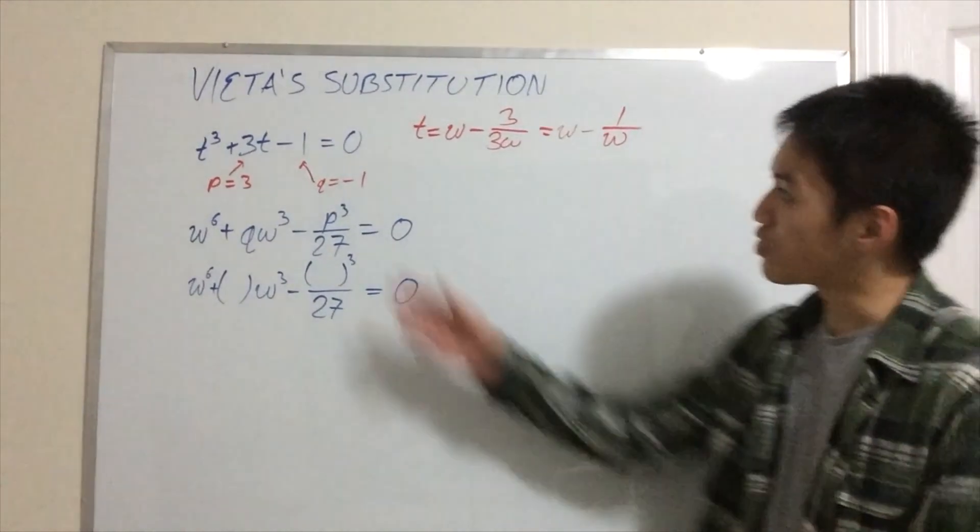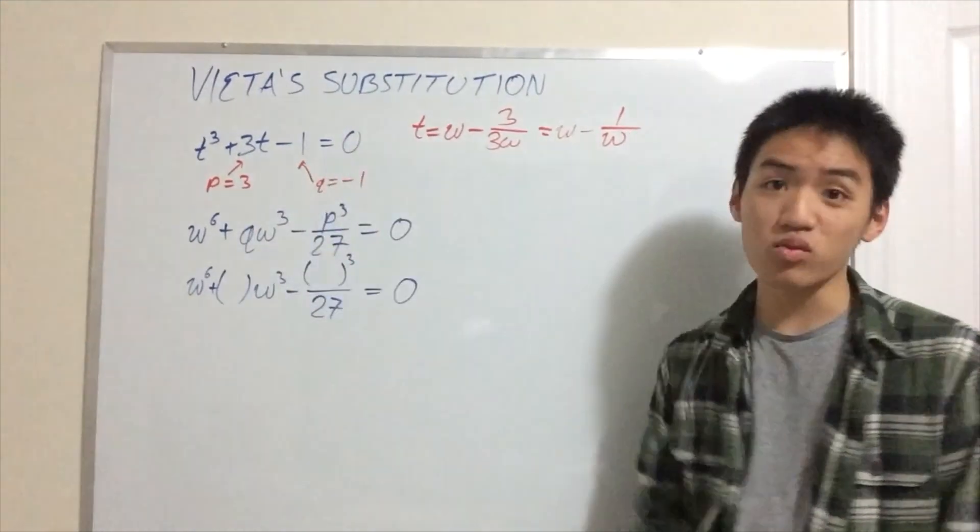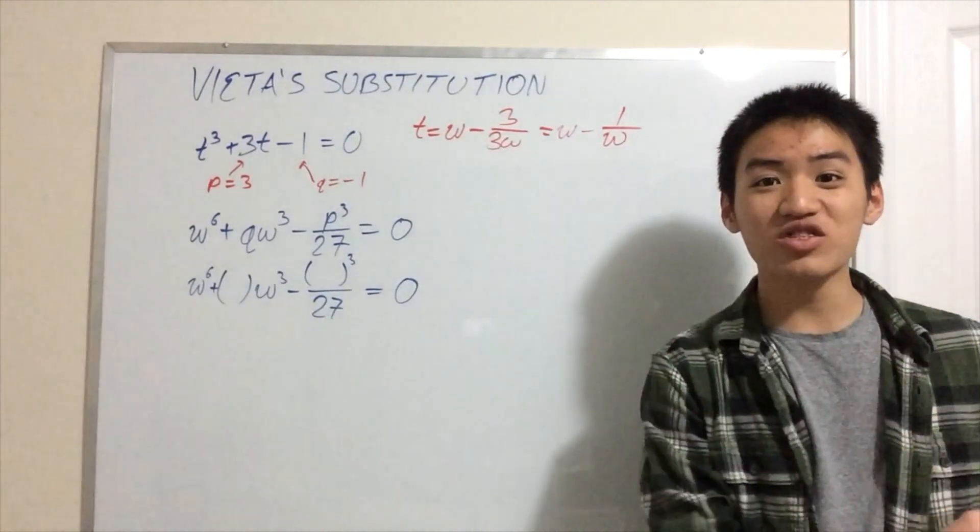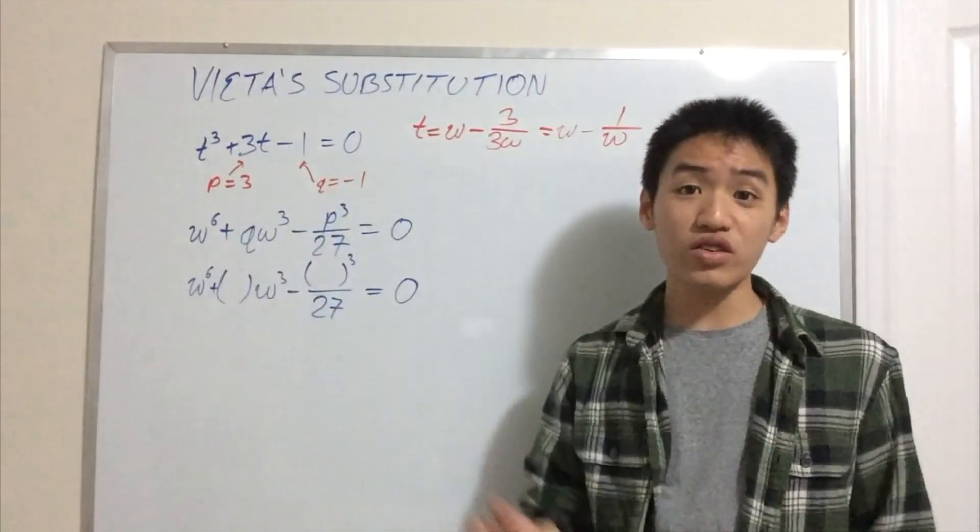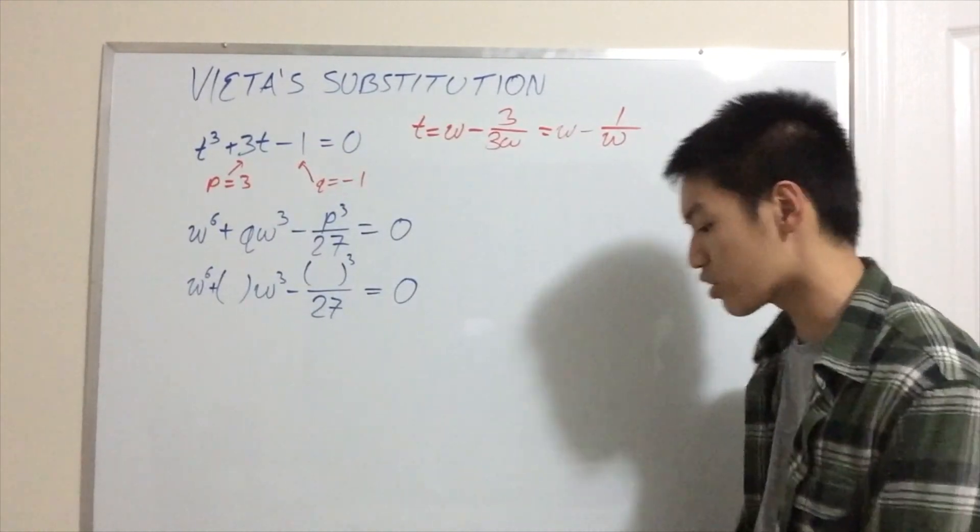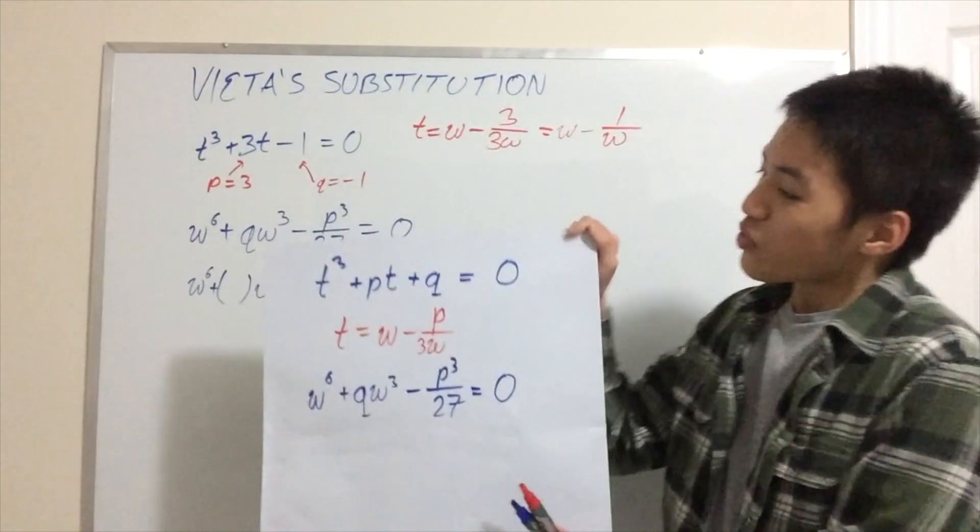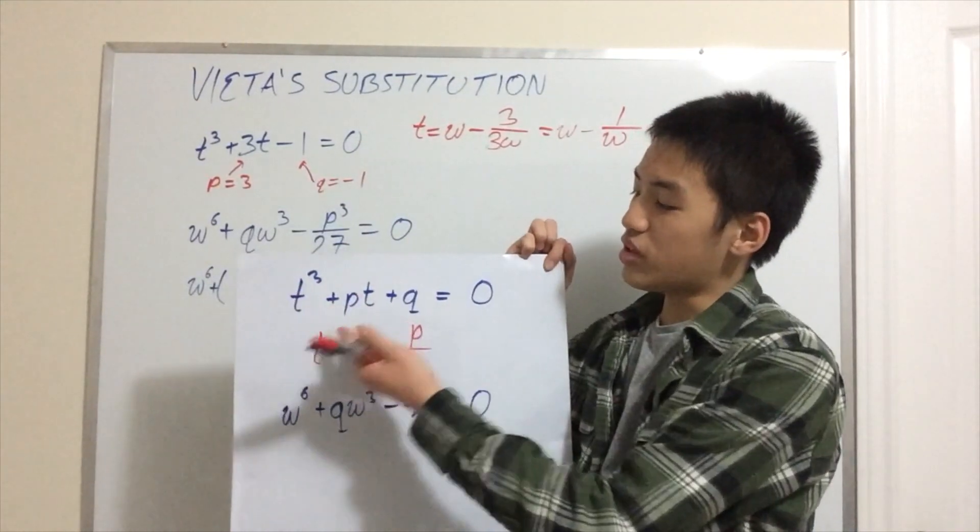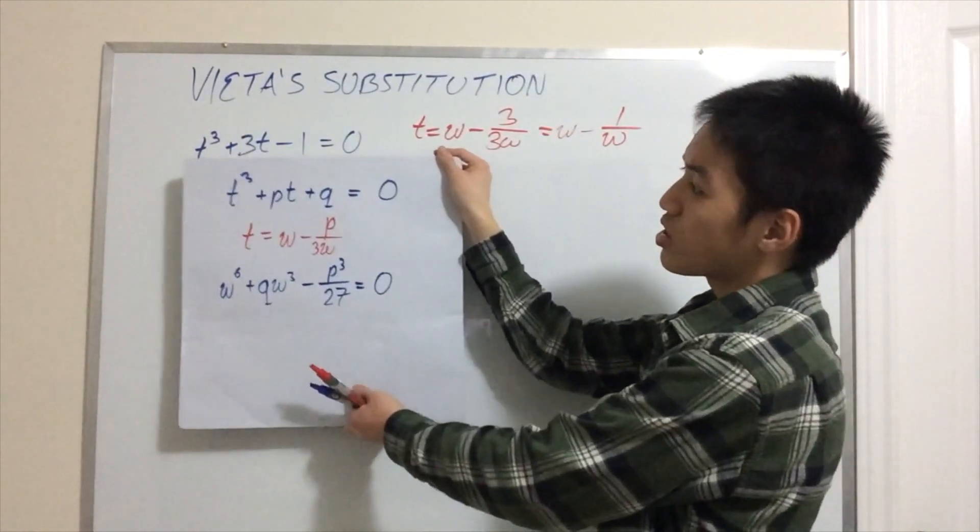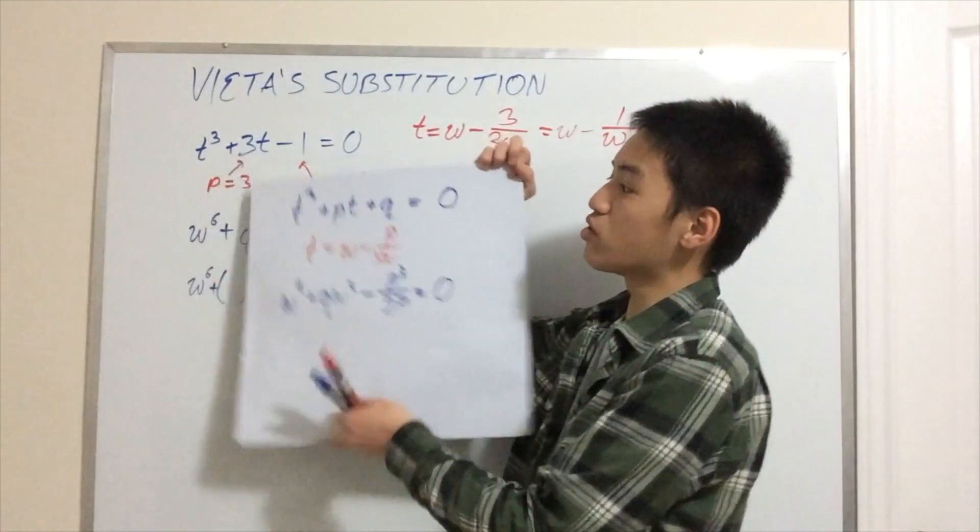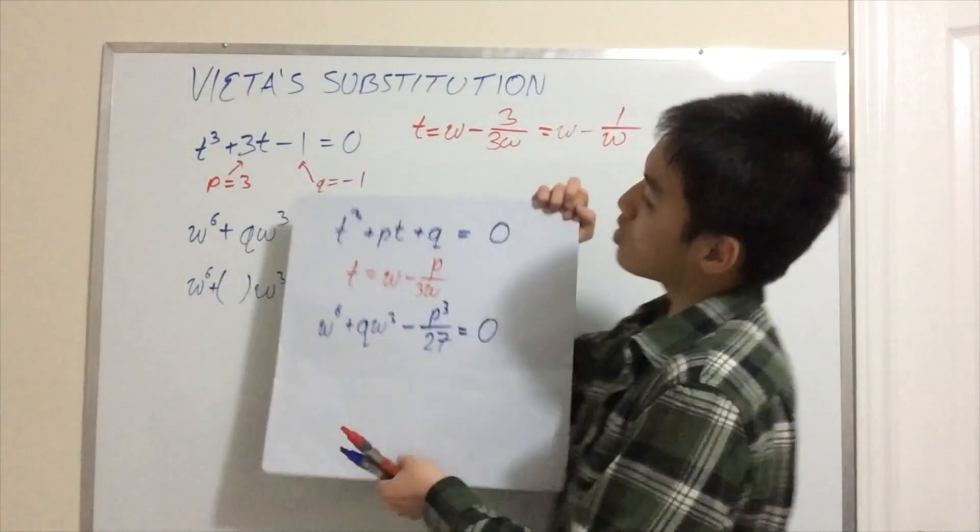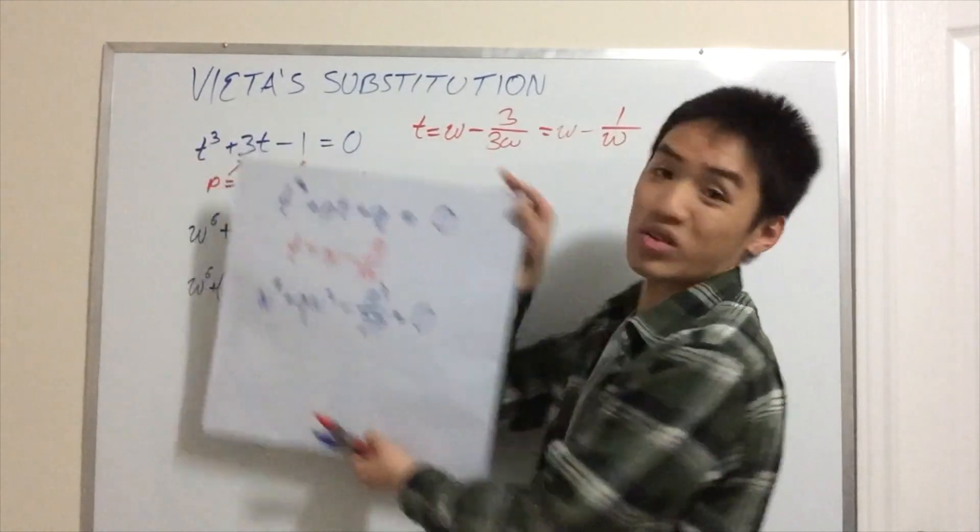Okay, let's look at an example. Here we have t³ + 3t - 1 = 0. Can we even use Vieta's substitution? That's the first thing you should ask. Maybe you just had a different type of cubic equation. In that case, Vieta's substitution is unfortunately going to fail you. So, quick reminder, if we have t³ + pt + q = 0, we can make Vieta's substitution. Let's check quickly. Yep, it matches. And you can tell because there's no t², or the coefficient of the t² term is 0, and the leading coefficient is 1. So, we're set.